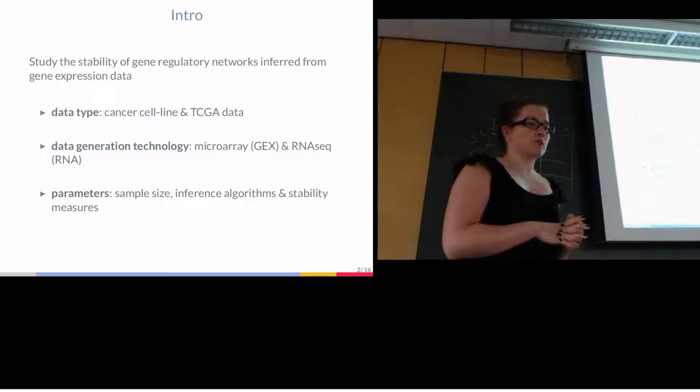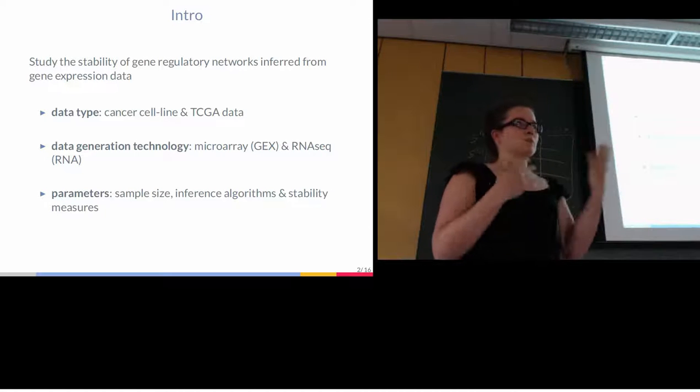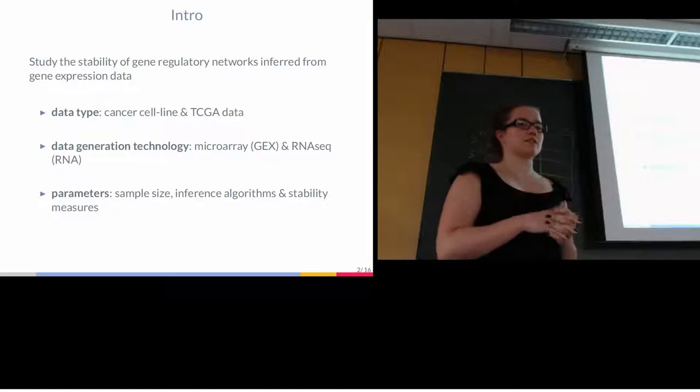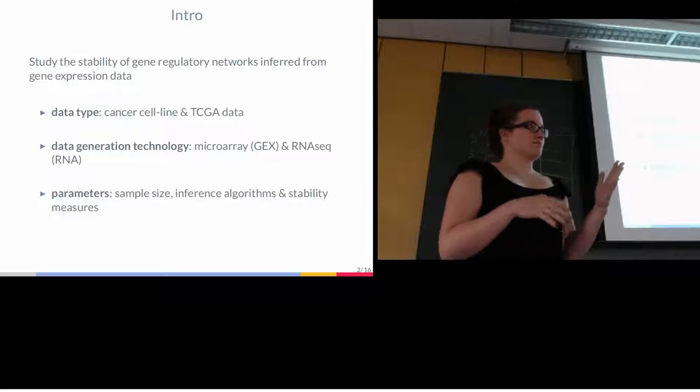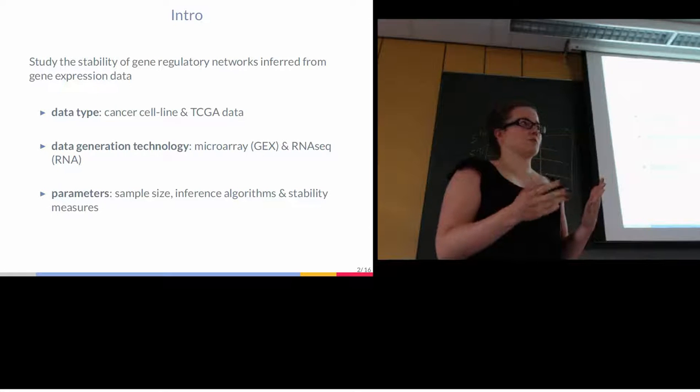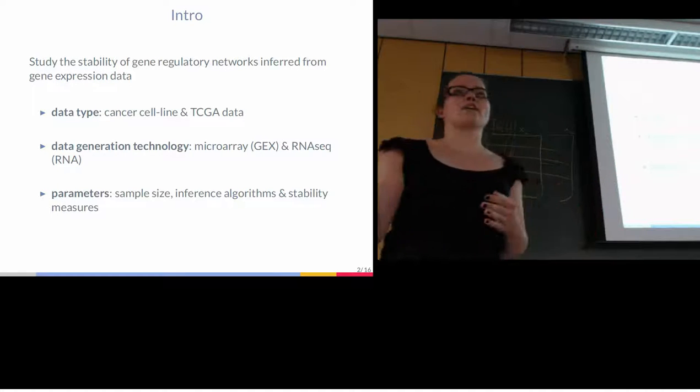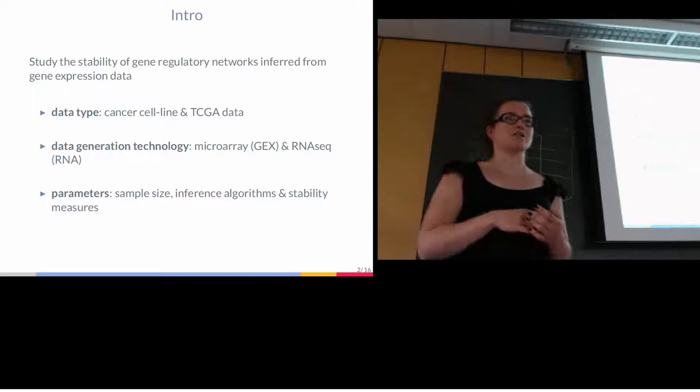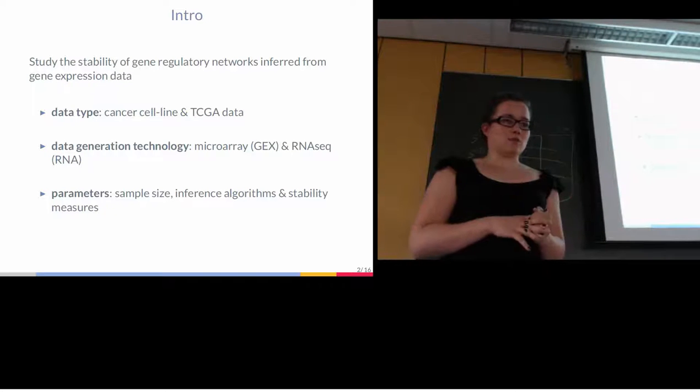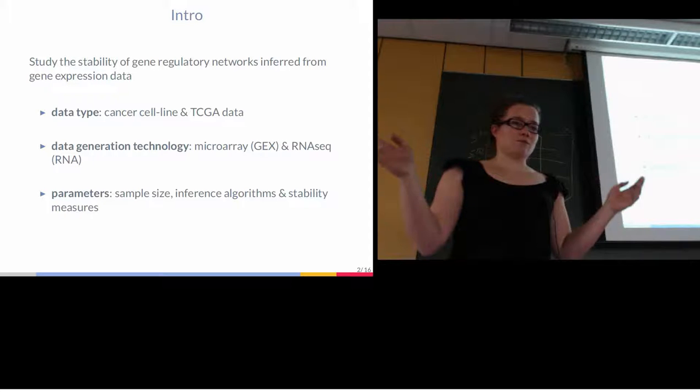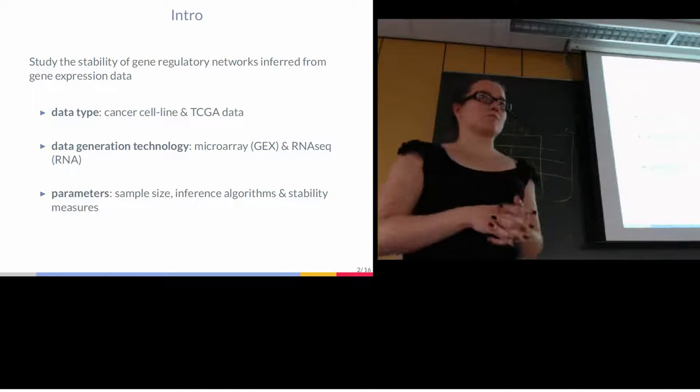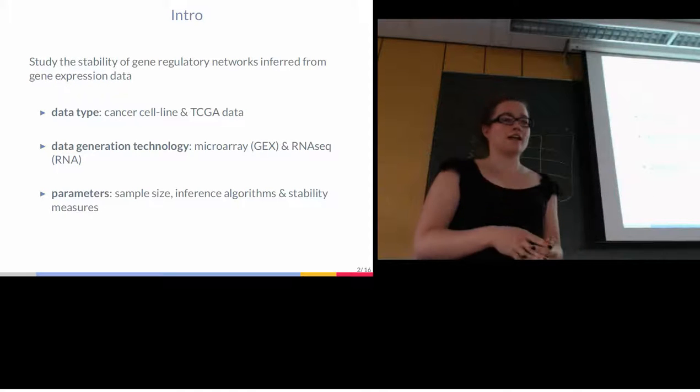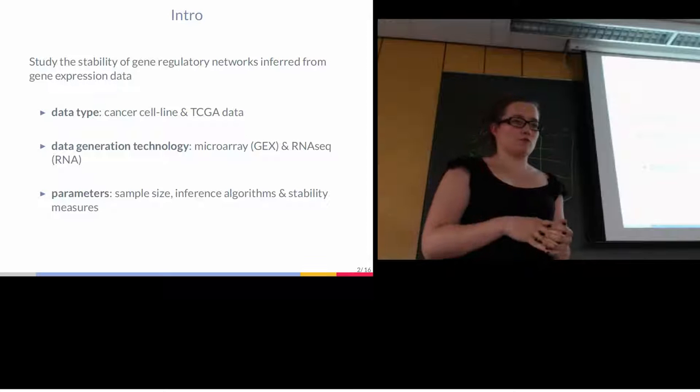So what we were asking ourselves, we were working a lot with cancer data from TCGA, how can we validate those? Because as Patrick said, we don't have the truth. We might know some interactions that have been validated in experimental settings, but we don't know all the interactions that we should infer. So it's much more difficult to actually validate networks that have been inferred from real data.